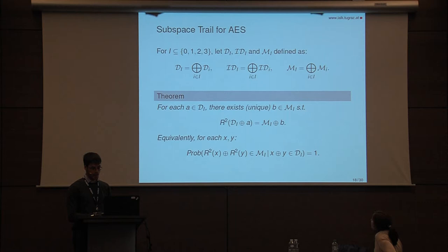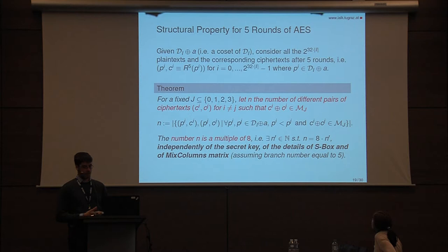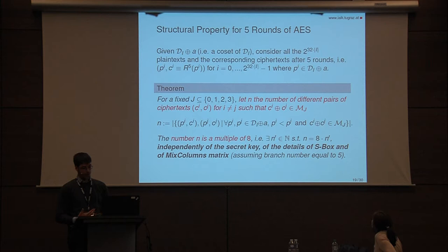We can use this notation to reformulate this property. Consider plaintexts in the same coset of diagonal space D_i, and count the number of different pairs of ciphertexts that belong to the same coset of a mixed space after five rounds. This number is a multiple of eight. If the final MixColumns is omitted, you can simply replace the mixed space with the inverse diagonal space. The same property also holds in the decryption direction: using ciphertexts in the same coset of a mixed space and counting pairs of plaintexts belonging to the same coset of a diagonal space.